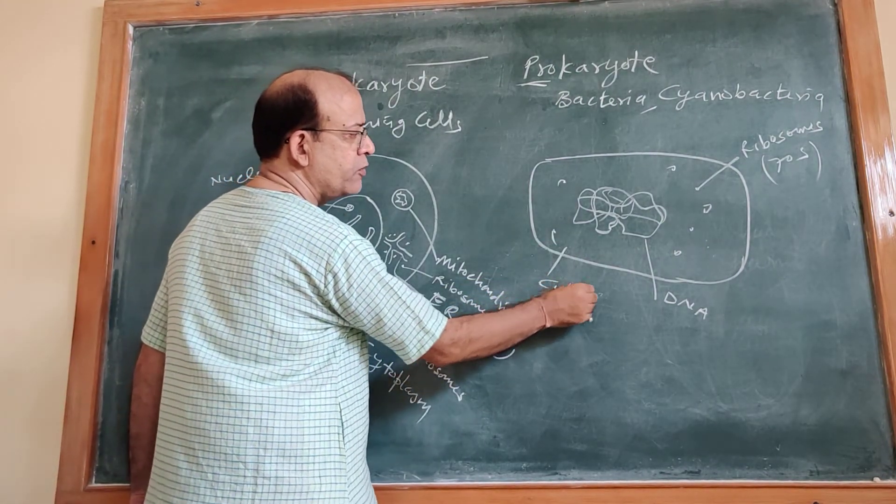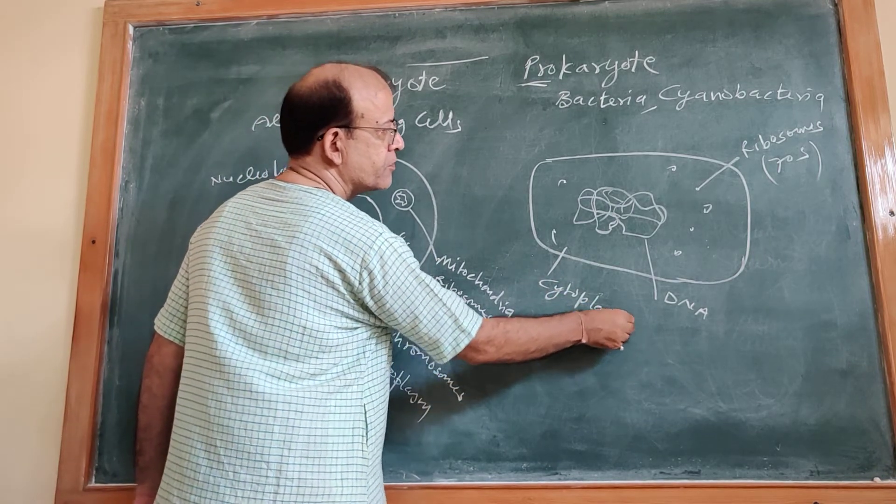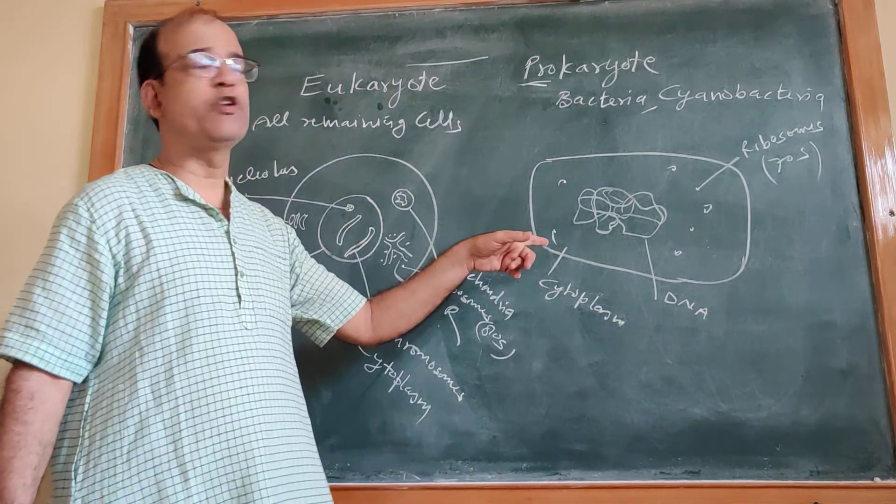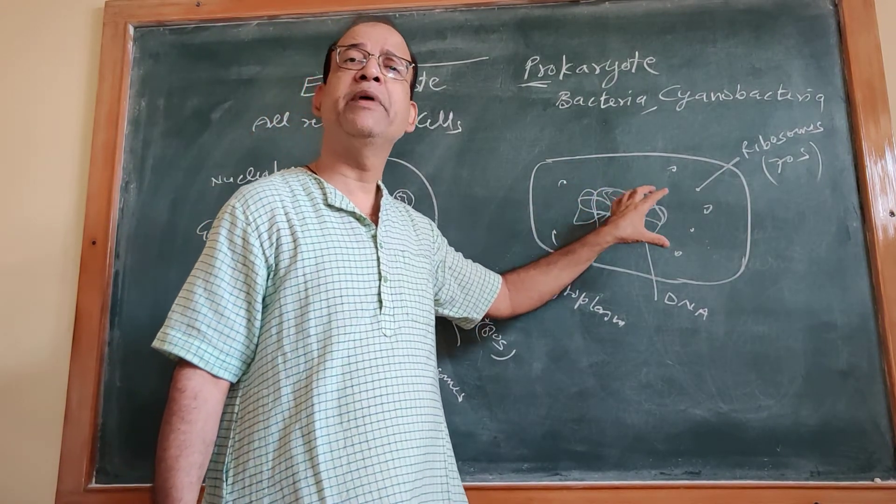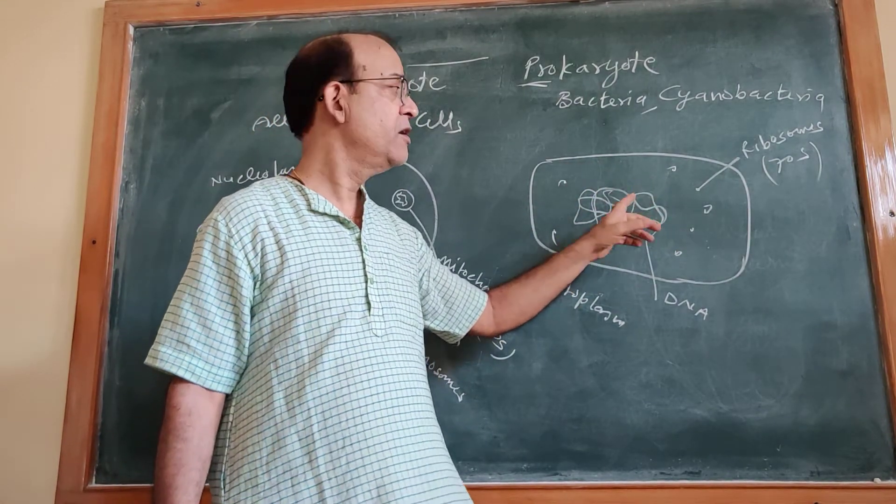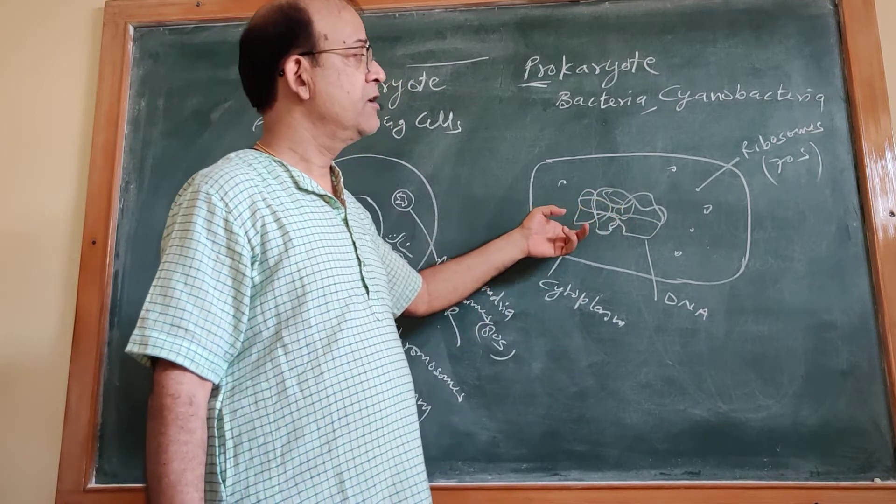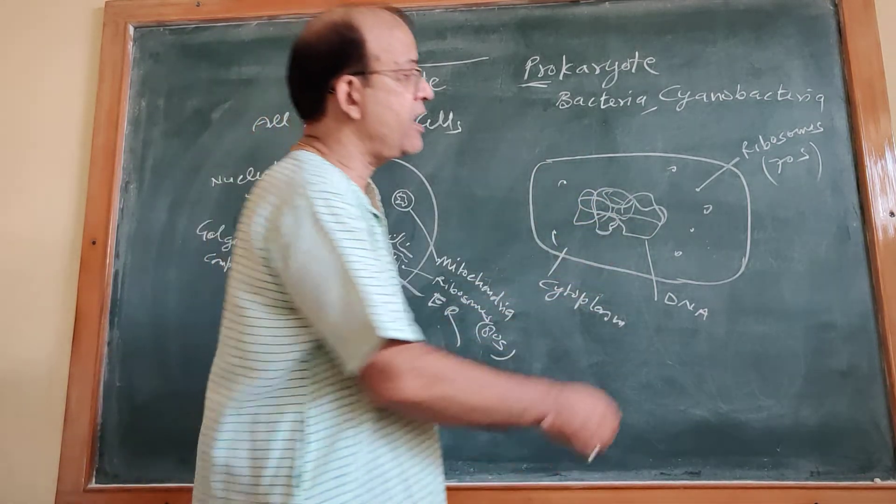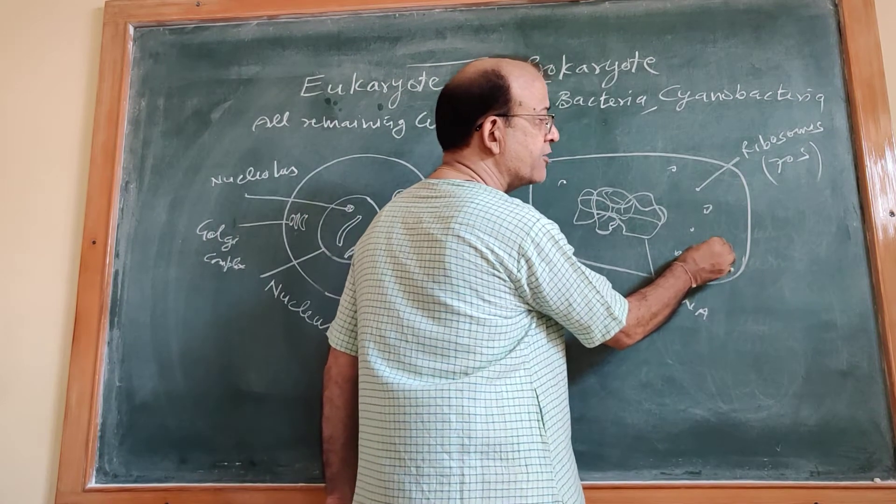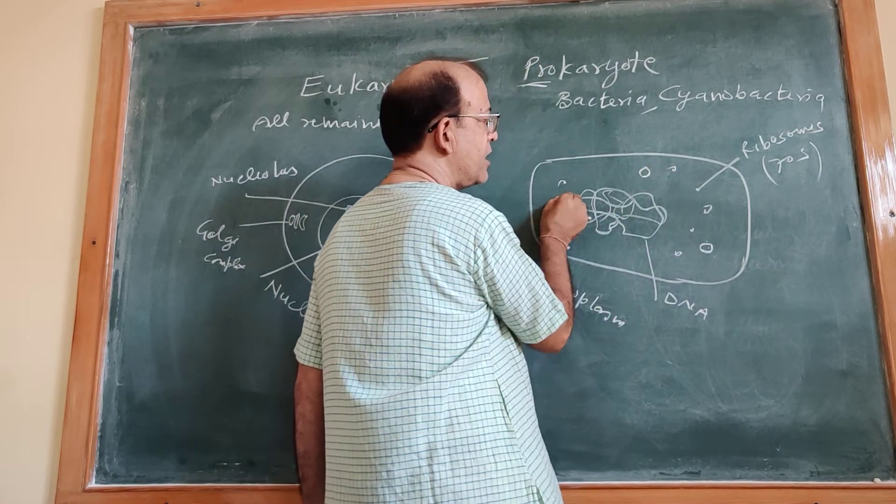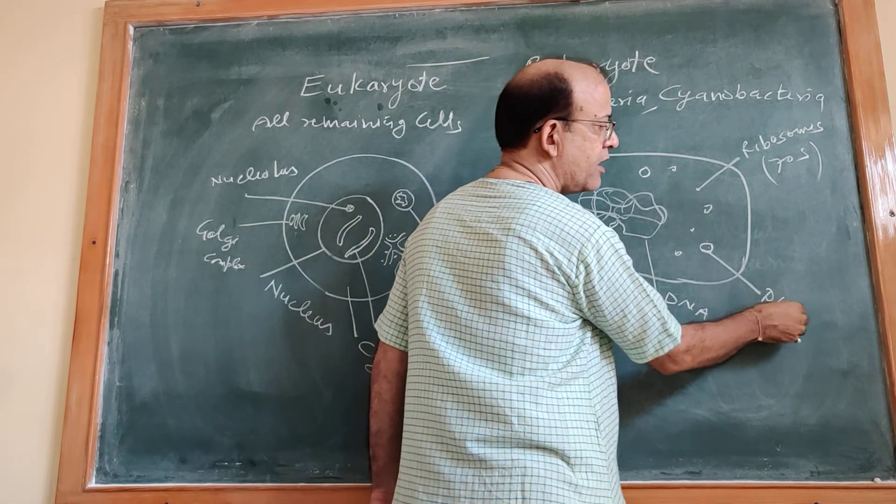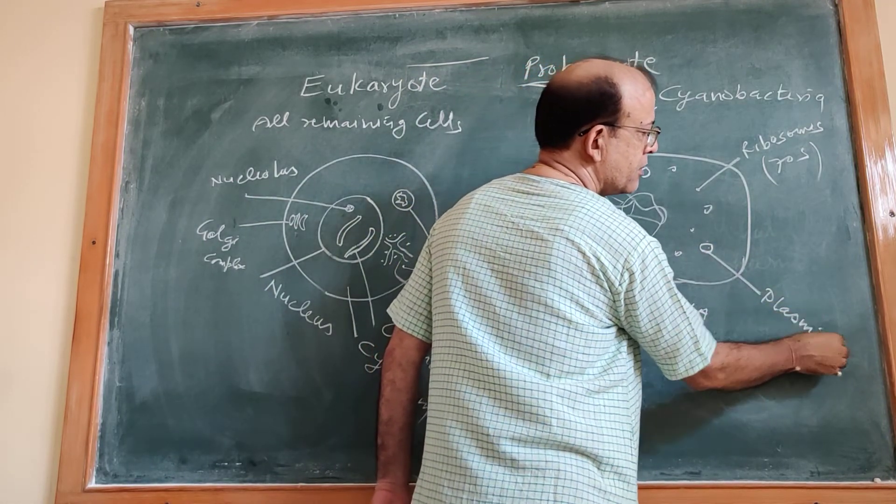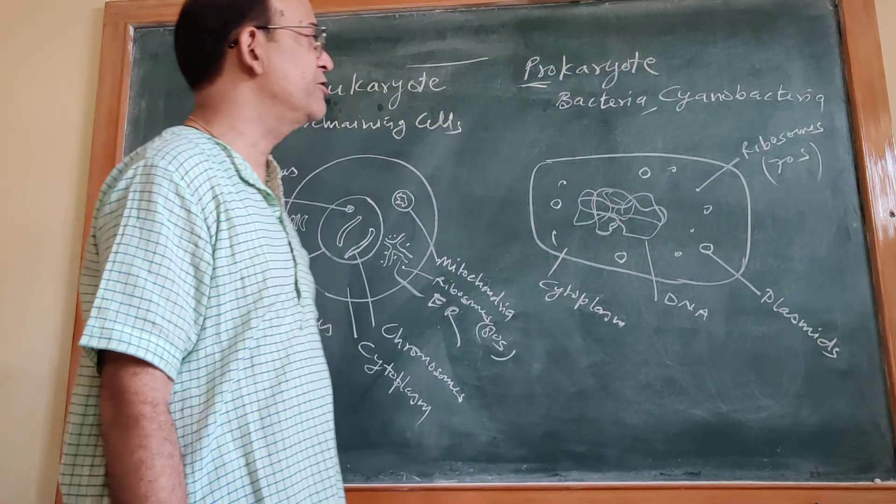This is cytoplasm. In this cytoplasm, this is main DNA. This is main cellular DNA. But beside this main DNA, some extra DNA are also present. Extra rings of DNA are also present. And these extra rings of DNA are called plasmids.